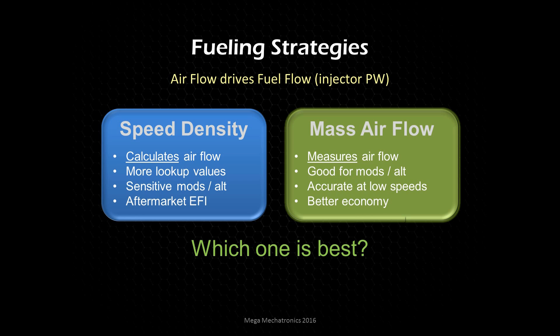So which one is best? The answer is: it depends, because both can do the job and both have their benefits depending on your application. For a street car I'd recommend the mass airflow system because it's simpler and gives better economy. For a drag race application, speed density works fine since you're under wide open throttle, and if you go to a different track at a different altitude you can compensate because you probably have a tuner with you. Mass airflow will be easier to tune for a street car.